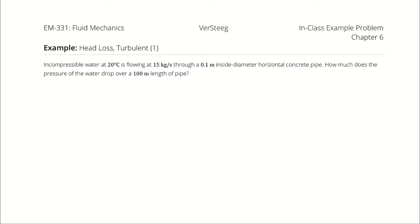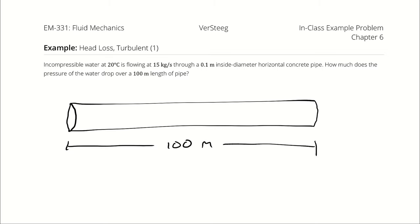Incompressible water at 20 degrees Celsius is flowing at 15 kilograms per second through a 0.1 meter inside diameter horizontal concrete pipe. How much does the pressure of the water drop over a 100 meter length of pipe? I will start with a very accurate system diagram. We have a horizontal pipe that is 100 meters long.